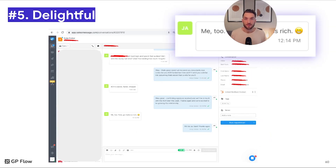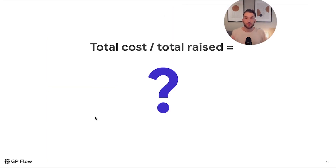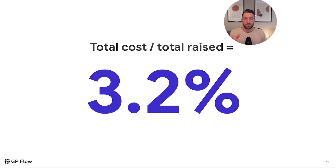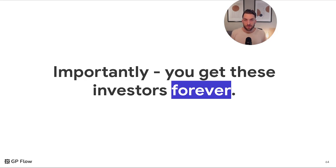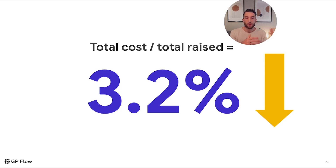And lastly there were people that were absolutely delightful to work with — even if they invested or didn't invest, they still made it a positive human-to-human interaction. Moving to the cost of capital: the total cost of the program divided by total capital raised was 3.2% for us. Importantly, you get these investors forever — their name, contact info, and full profile are now in your CRM unless they ask you to stop emailing. These people still open our content and engage with our emails, which means that 3.2% is continuing to trend down as more of them invest or existing investors invest more into our offerings.